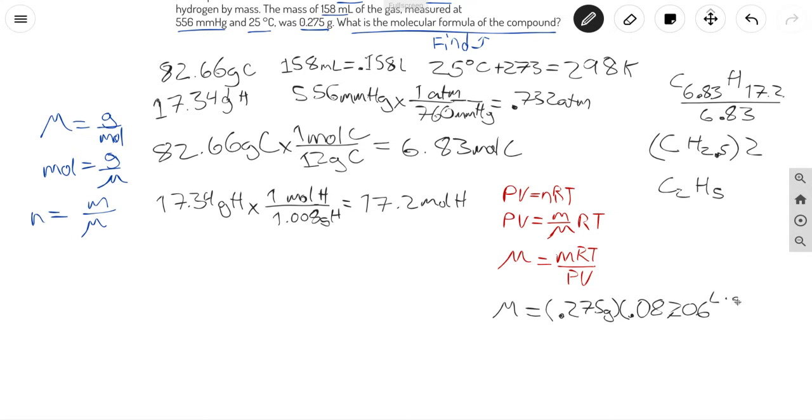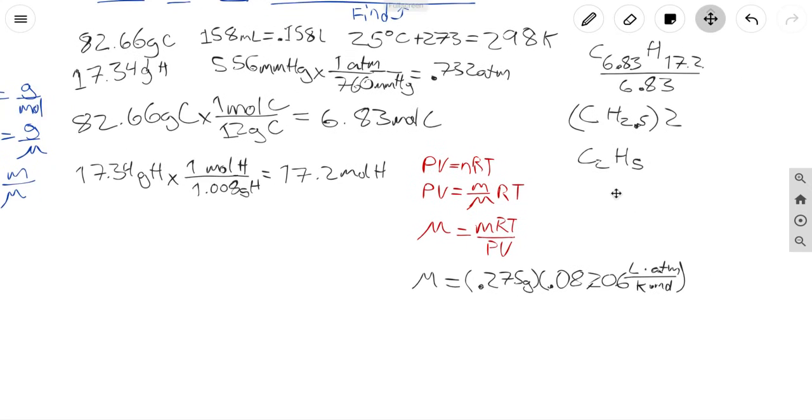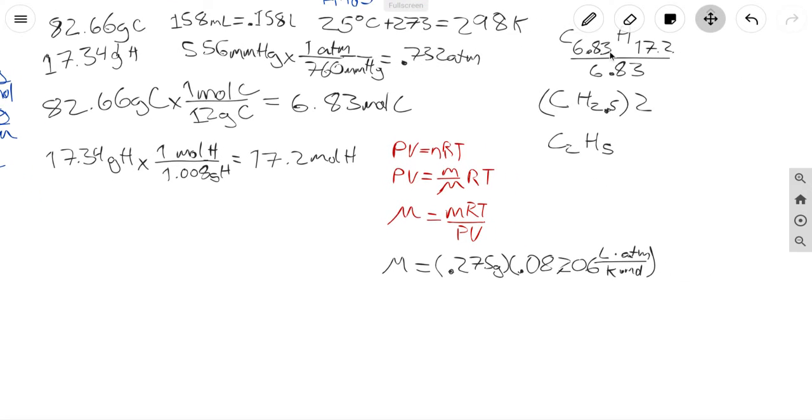And then R of course is our constant, and the constant is 0.08206 liters times atm over Kelvin times mole. Temperature we found that to be 298 Kelvin.